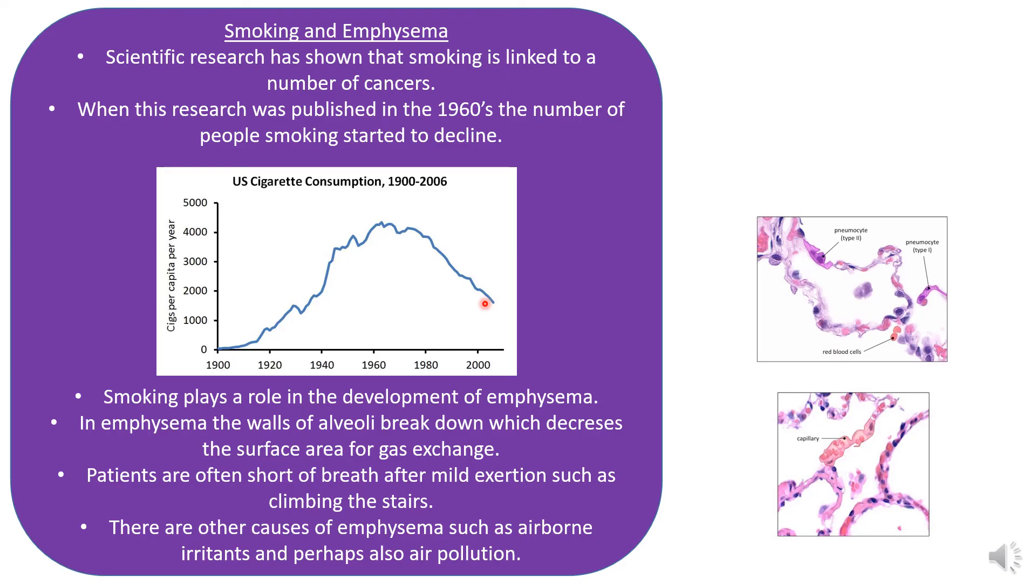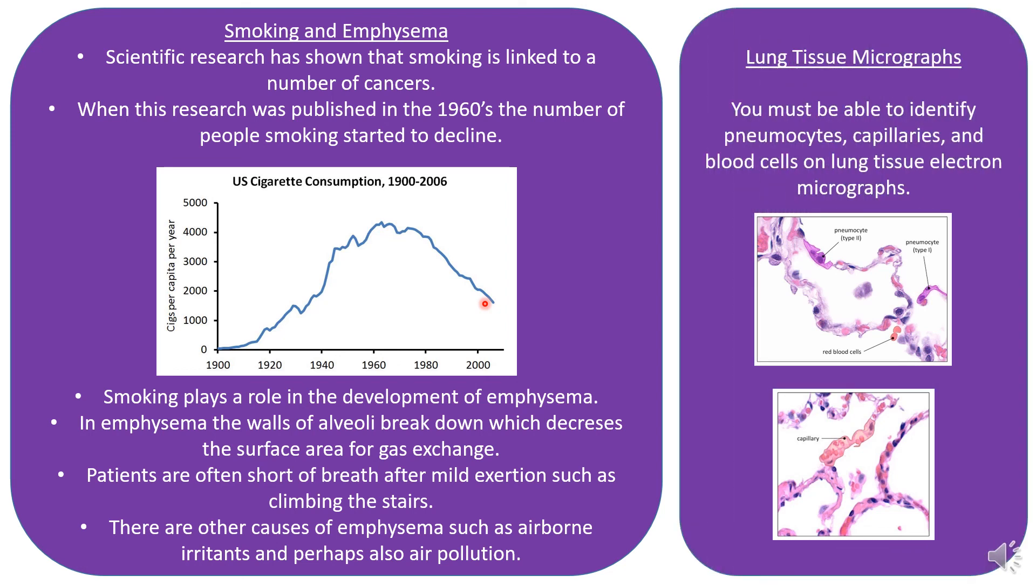Smoking can cause a number of cancers, but it can also cause emphysema. Emphysema causes the walls of the alveoli to break down, which decreases the surface area for gas exchange. The symptoms of emphysema are generally shortness of breath after people do very little exercise, like climbing a staircase. Other things can cause emphysema as well, so irritants, and they think that air pollution could also cause it. Here you can see that you've got some lung tissue micrographs, and you must be able to identify the different parts of the lung tissue: red blood cells, type one and type two pneumocytes, and capillaries.